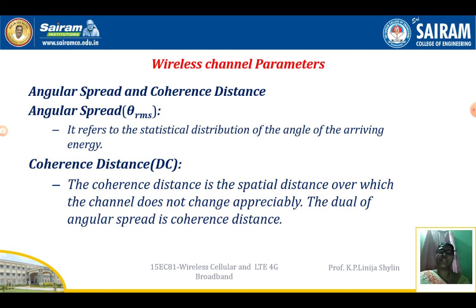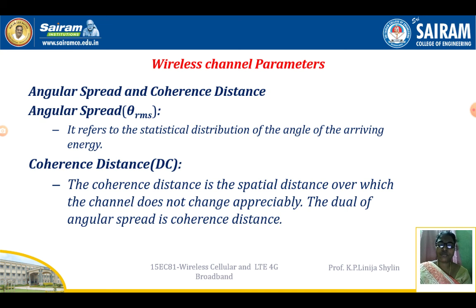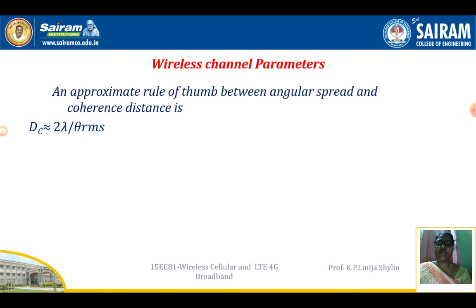The last channel parameters are angular spread and coherence distance. Angular spread, represented by θ_rms, is the statistical distribution of the angle of the arriving energy. Coherence distance is the distance over which the channel does not change. The thumb rule relating them is: D_c ≈ 2λ / (θ_rms), where angular change plays a vital role.